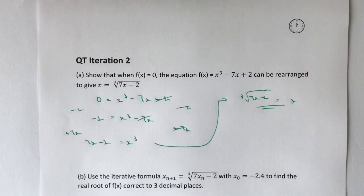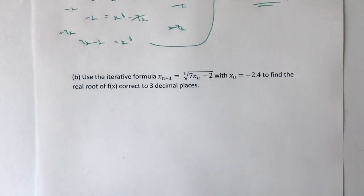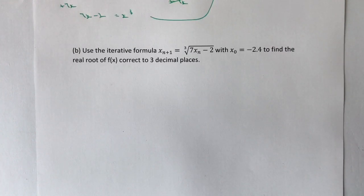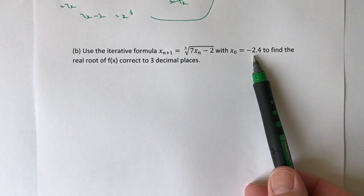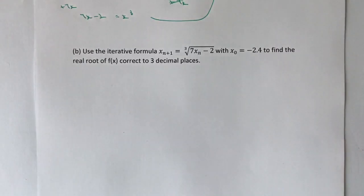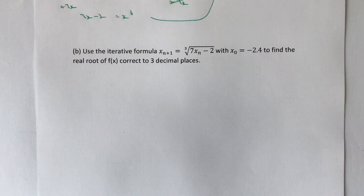Then it says: use the iterative formula with x₀ equals minus 2. This is exactly the same as the first question in this playlist. All we're doing is starting with that value, and then progressively putting our answer into the formula to get a closer approximation of what they call the real root. At the end of the previous video I gave an explanation as to why that happens, and I will do with this one as well.